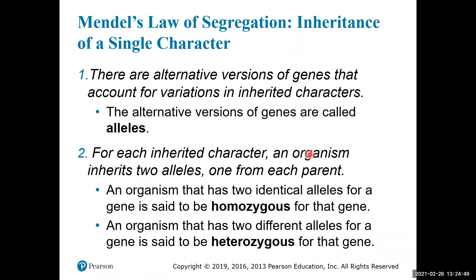Based on these observations, Mendel came up with four specific hypotheses for the inheritance of single characters. The first is that there are different versions of genes that account for the variation we see, and these alternative versions are called alleles. For eye color, the character is eye color, and each allele determines a specific trait — alleles for blue eyes, green eyes, brown eyes, or hazel eyes. For flower color, you have a purple allele and a white allele.